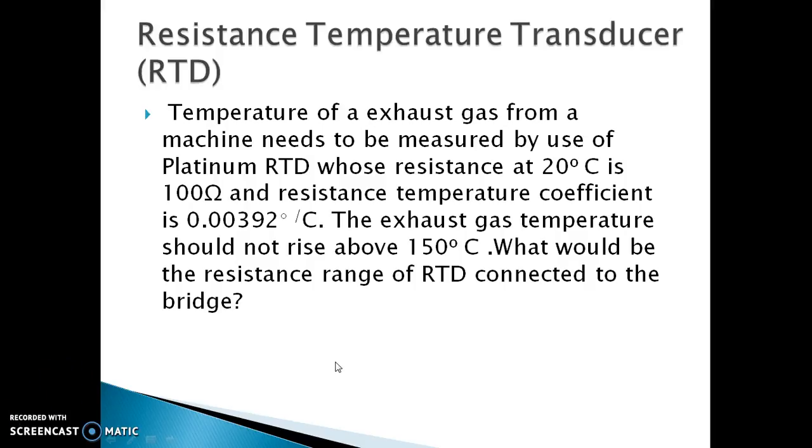I hope that you have finished calculating. We have to use the Kalender-Van-Deusen equation where we have not considered the higher order values. The delta T here is the temperature range from 20 degrees to 150 degrees. And the platinum alpha values are given in the problem.